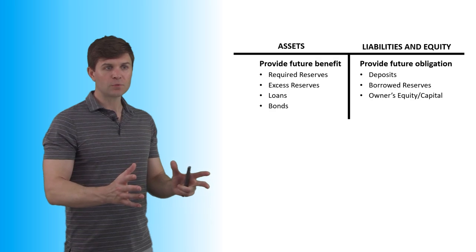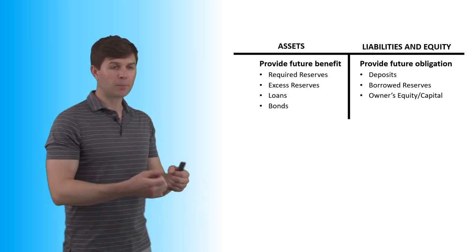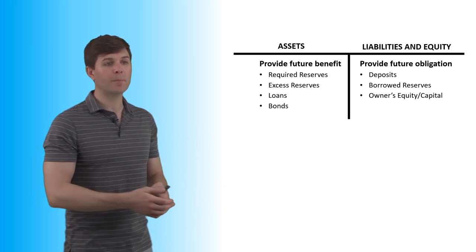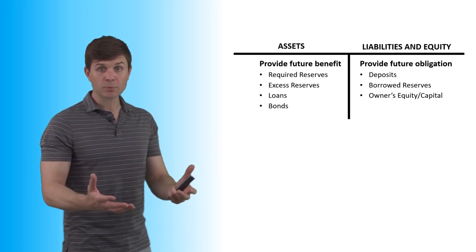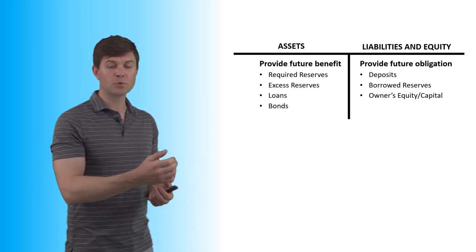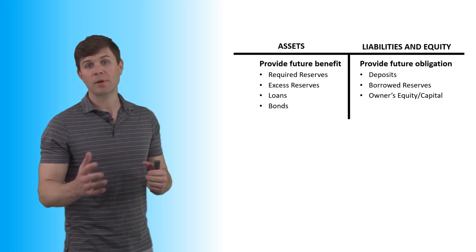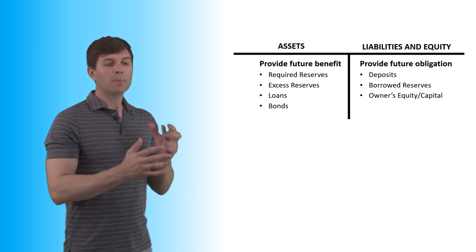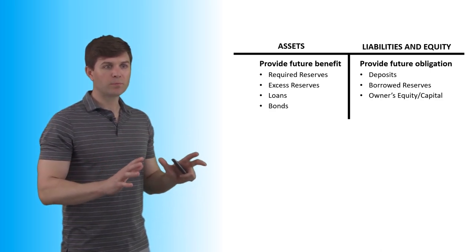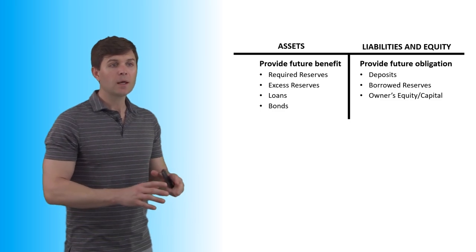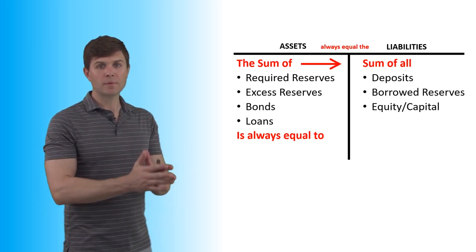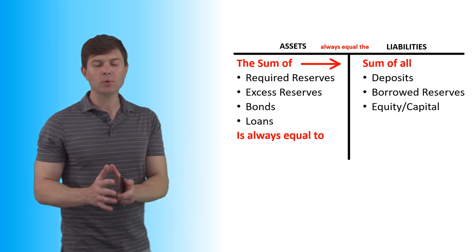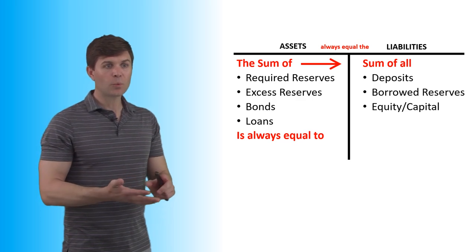The excess reserves can be used to loan out money and make profit, or to invest in bonds, stocks, whatever it might be. Loans out to customers will be repaid back, so that's a future benefit. And then we also have bonds, whether the Federal Reserve is buying and selling them or whether they're corporate bonds. These are usually the seven different things we'll see in these two columns.